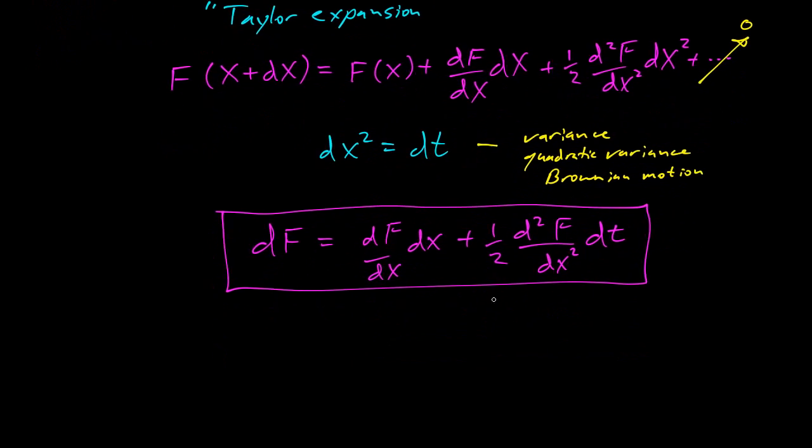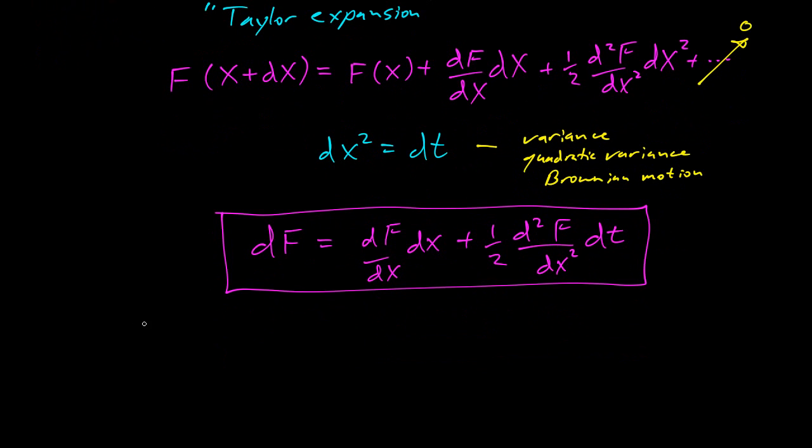So this is how we can do calculations. And so in our example, we had F(x) = x². Now what can we do? What's dF? So dF equals dF/dx, which is 2x, dx, plus a half times the second derivative of f with respect to x. So what's that? First is 2x, second is 2, and then dt.